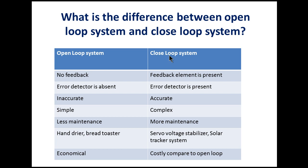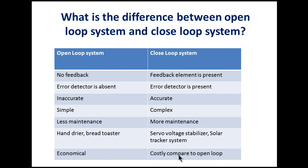Control system: there are two kinds of control system — open loop and closed loop. In the open loop system there is no feedback, while the closed loop system has feedback. Open loop has no error detector; closed loop has an error detector. Open loop is inaccurate; closed loop is accurate. Open loop is simple; closed loop is complex because a control mechanism must be designed. Open loop requires less maintenance; closed loop requires more. Examples of open loop: hand dryer, bread toaster, air heater. Examples of closed loop: servo voltage stabilizer, solar tracking system. Any system with feedback can be considered a closed loop system. Closed loop is more costly compared to open loop.